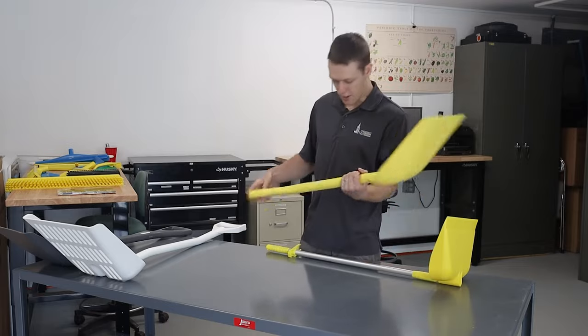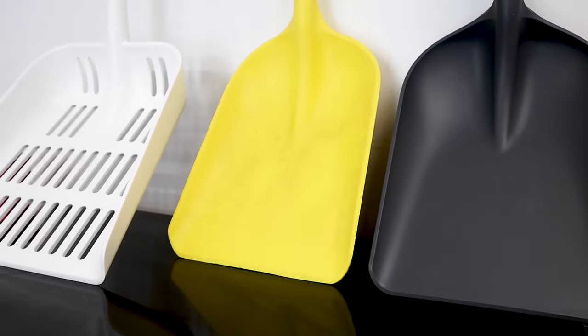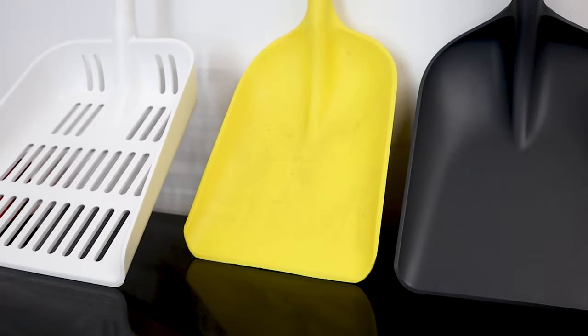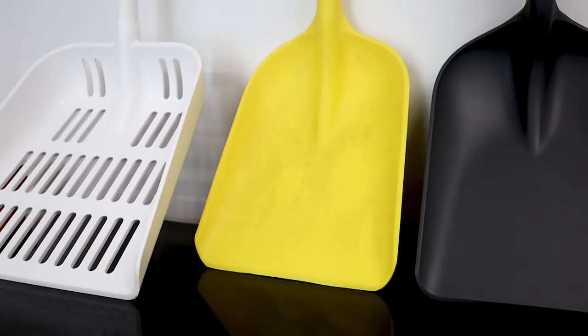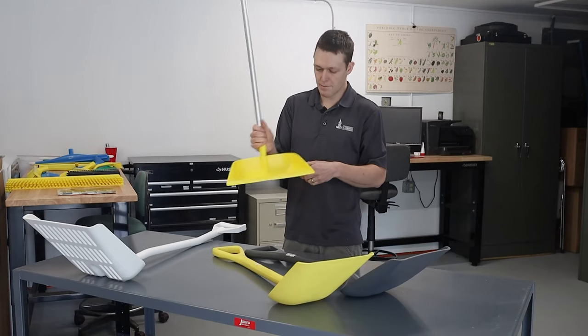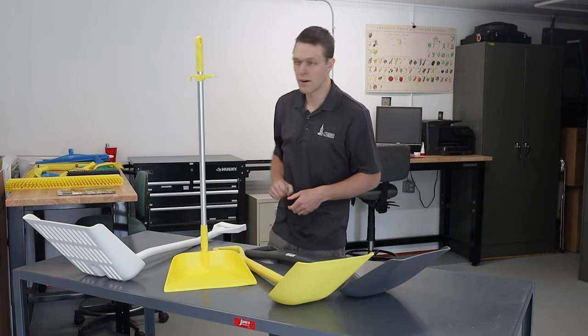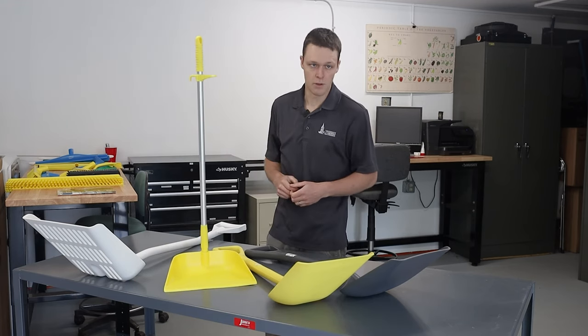Another molded shovel in yellow. Nice short handle. Looks like it's pretty much identical to that gray one here. And then they've got this dust pan. This is what goes with what they call the lobby broom. So it's got a spot here to hold your broom as well.